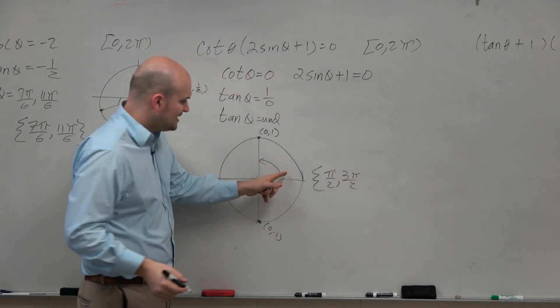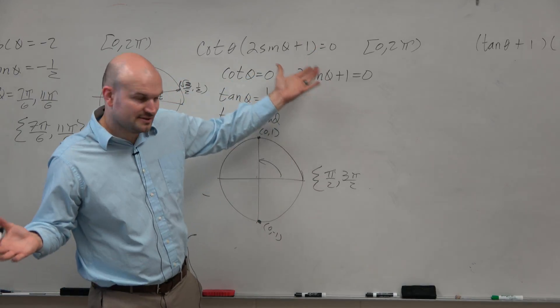Now again, real quick question, why can't I do negative pi halves? Because it's not in 0 to 2π. Not in 0 to 2π. Good job.